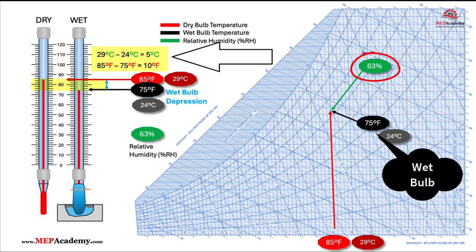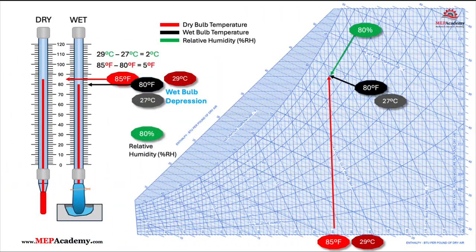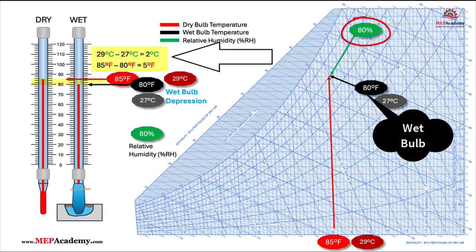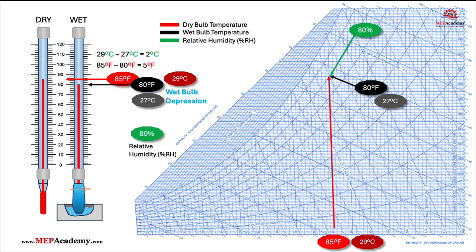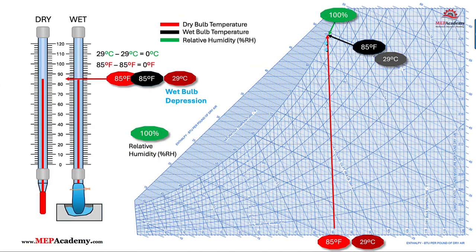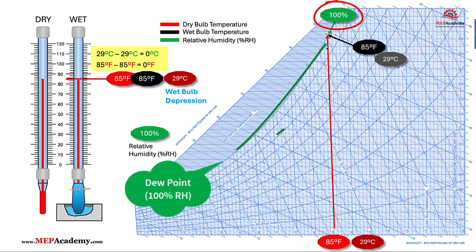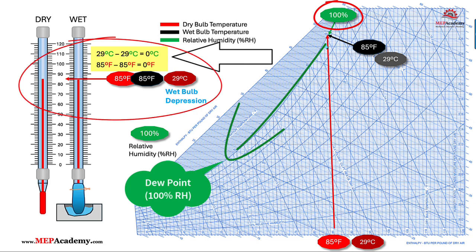What will happen when the wet bulb equals the dry bulb temperature? What will the relative humidity or dew point be? With a 5°F (2°C) wet bulb depression, the relative humidity has reached 80% at an 80°F (27°C) wet bulb. We can see there is very little wet bulb depression, and at this point swamp coolers are worthless, as there is very little room for more evaporative cooling. When the dry bulb and wet bulb temperatures are the same, we have 100% relative humidity and have also reached the dew point line where condensate occurs. The wet bulb depression is zero.